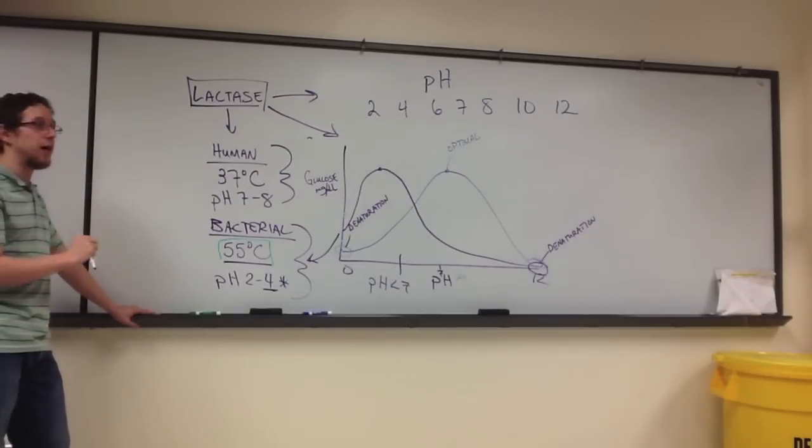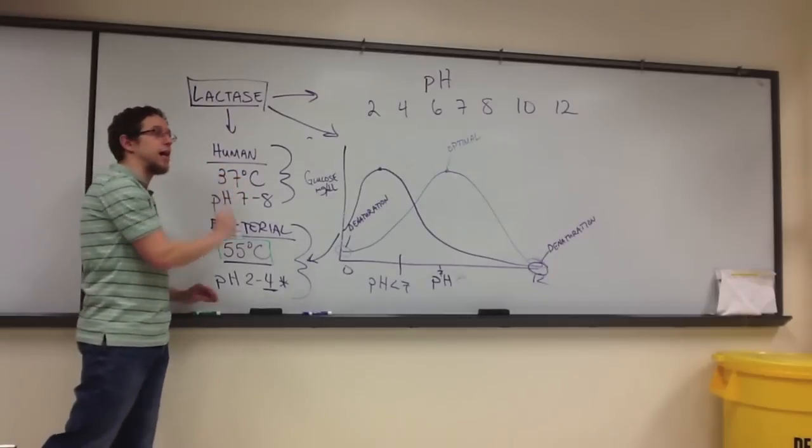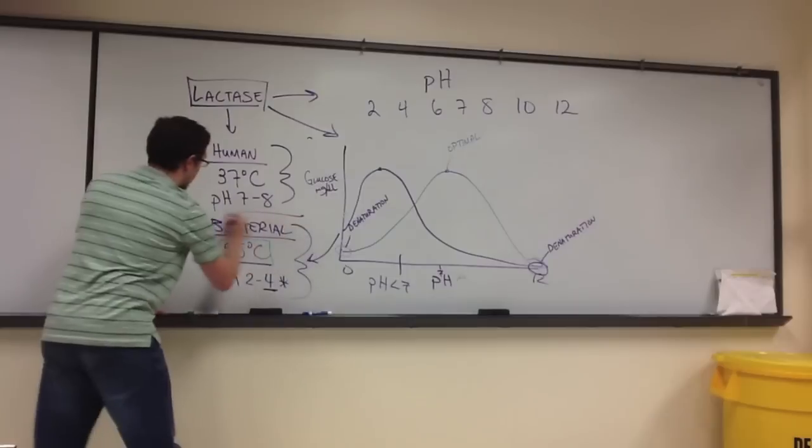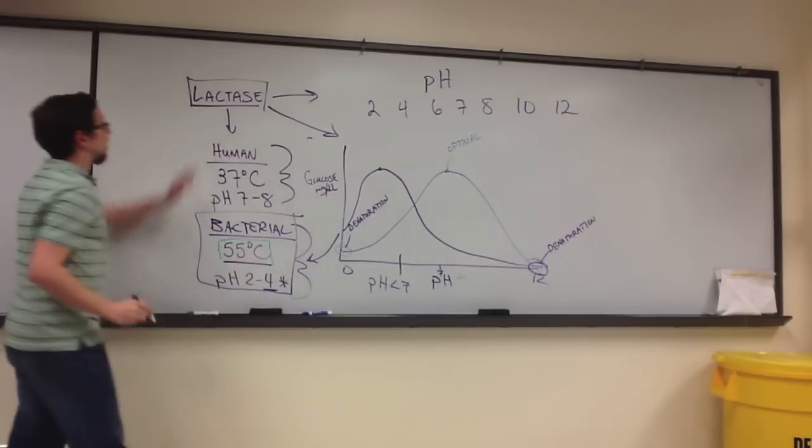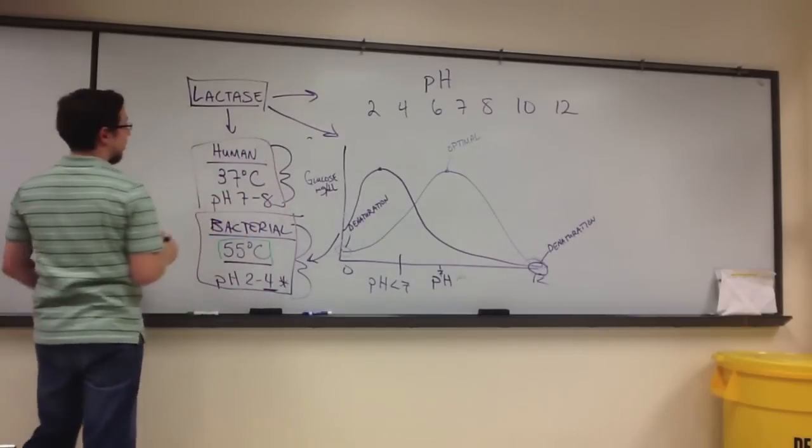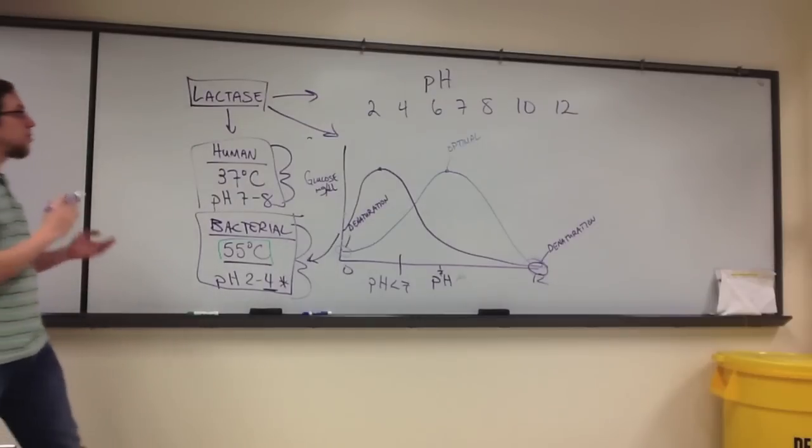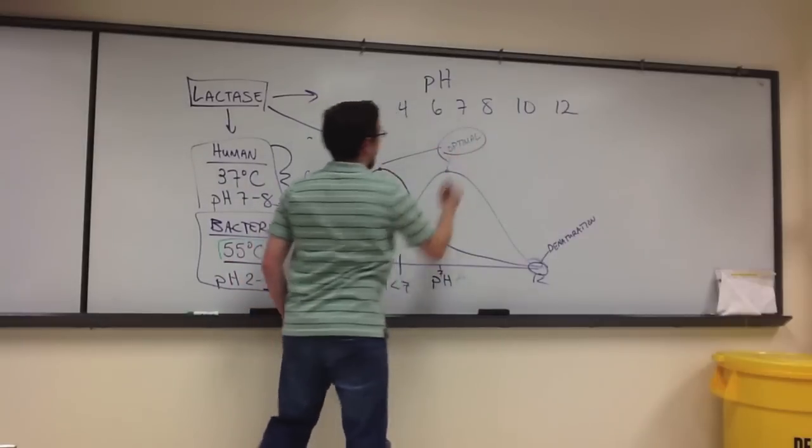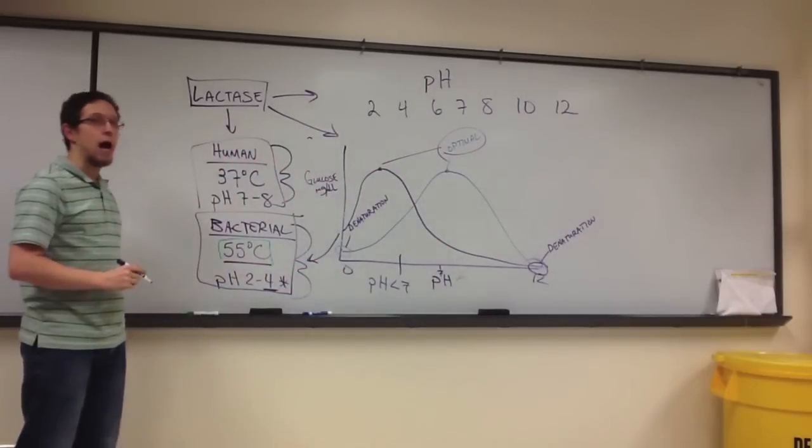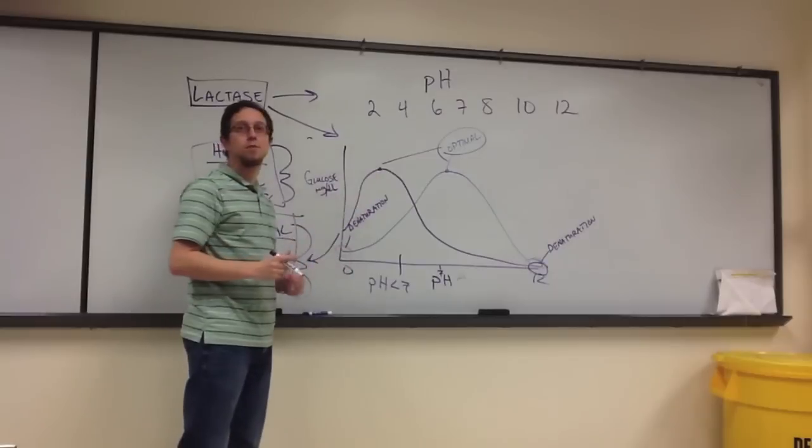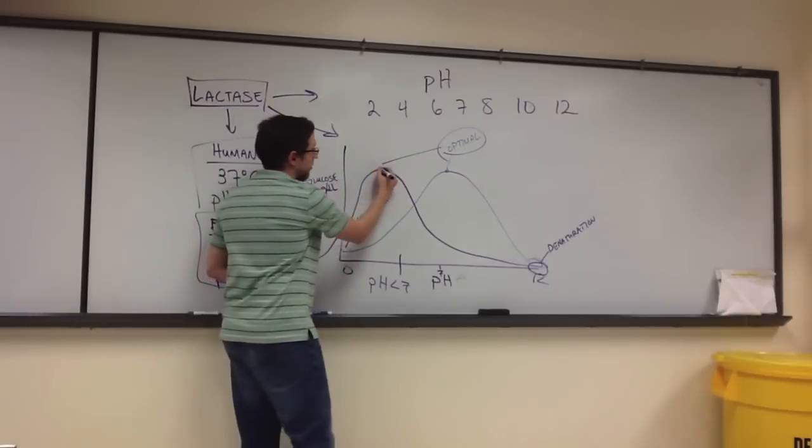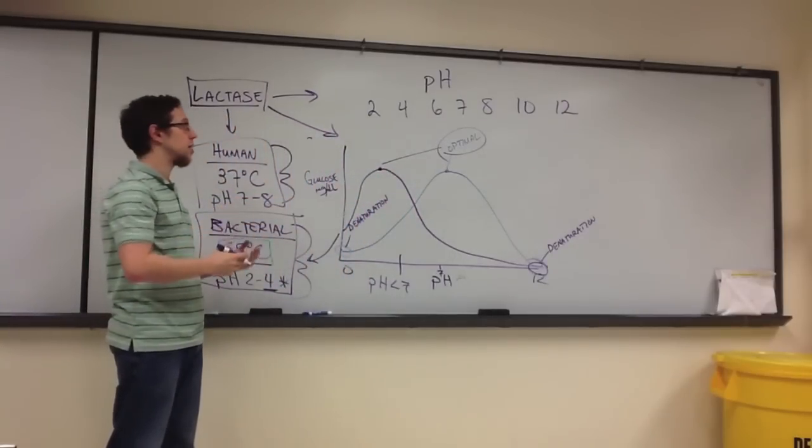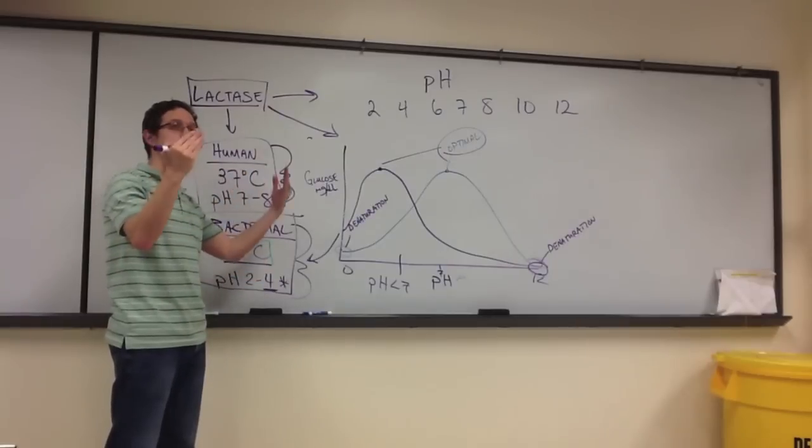The important thing to take away from both the optimal temperature exercise and the optimal pH exercise are not fully just what organism did we get the enzyme from. More importantly, what you should take away from this exercise is A, can you identify the optimal conditions if given a graph? Can you find where that optimal condition is? It's always the highest point on the graph. It's the peak. Optimal means best. So it is where the enzyme performs its activity at best.